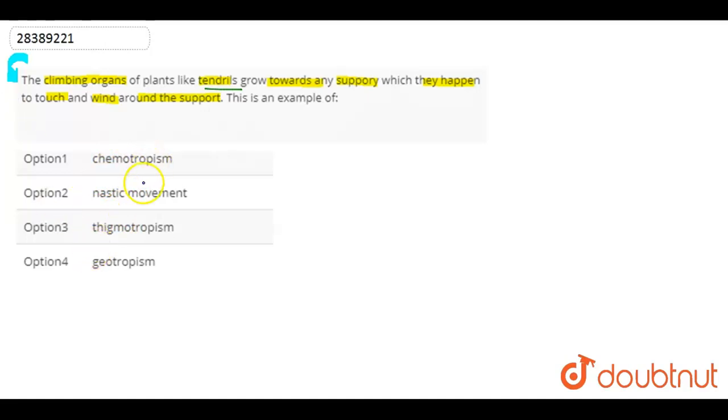First option is Chemotropism. Chemotropism is basically growth of plant in response to chemical stimulus. And here, we are seeing that we don't get any chemical stimulus. Chemotropism in plants during fertilization is shown.